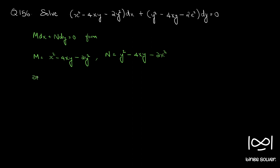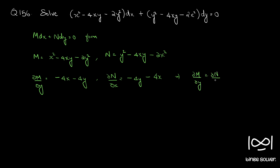We check whether ∂M/∂y equals ∂N/∂x. Partially differentiating M with respect to y: x² is constant so that term is 0, giving -4x - 4y. Partially differentiating N with respect to x: y² is constant so that term is 0, giving -4y - 4x. Therefore ∂M/∂y equals ∂N/∂x, so the differential equation is exact.